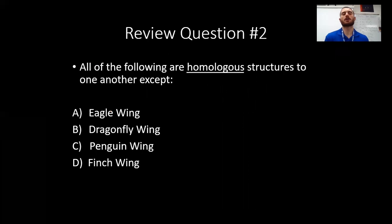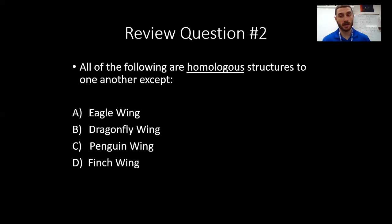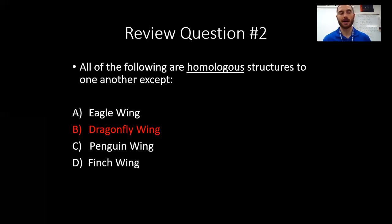Next practice question: all of the following are homologous structures to one another except — pause the video. A: eagle wing, B: dragonfly wing, C: penguin wing, D: finch wing. When I think of homologous, I'm thinking of relation, similar ancestor. Which of these four is the least related? It's letter B — insects are least related to the birds we see here: eagles, penguins, and finches. Homologous means common ancestor. Analogous is going to be function — if it was about function, the answer would instead be C.